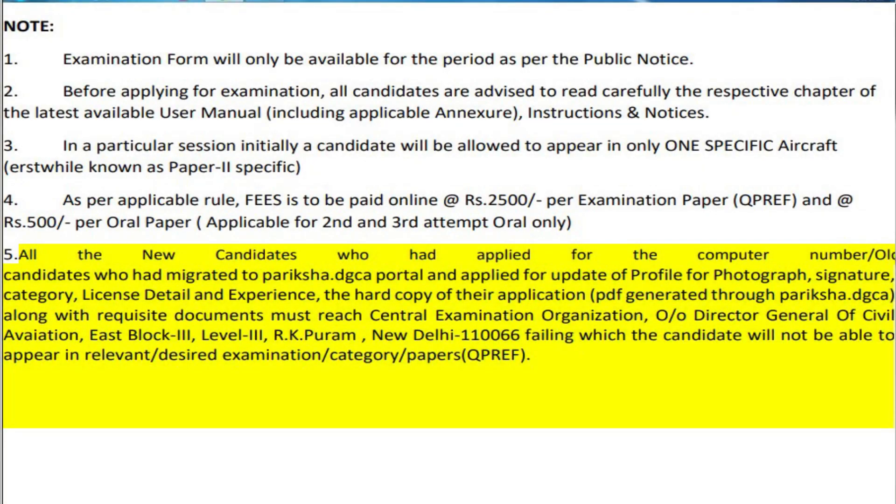Check for corrections and submit. After submitting, you will receive a temporary computer number in your email along with the PDF containing all your details. Now take a printout of the PDF and photocopies of all the documents you have uploaded. All the photocopies and the last page of the PDF should be self-attested by you and a gazetted officer. All the documents should be sent to this address and the DGCA should receive all your documents within 10 days.